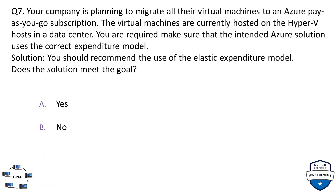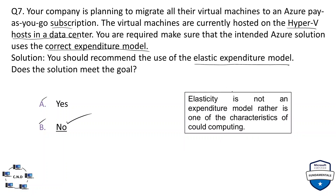Question number seven: your company is planning to migrate all their virtual machines to an Azure pay-as-you-go subscription. The virtual machines are currently hosted on a Hyper-V host in a data center. You are required to make sure the intended Azure solution uses the correct expenditure model. The solution proposed is to recommend the elastic expenditure model. The correct option is no. The elastic expenditure model — or elasticity — is not an expenditure model; rather, elasticity is a characteristic of cloud computing, not an expenditure model in Microsoft Azure.